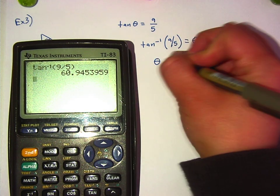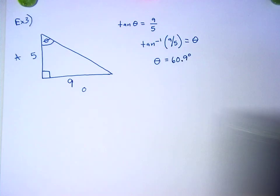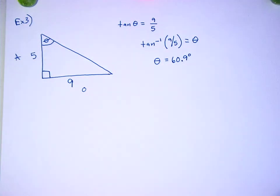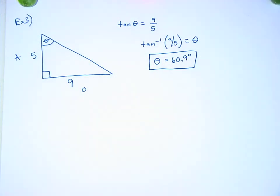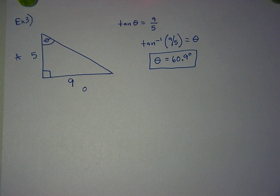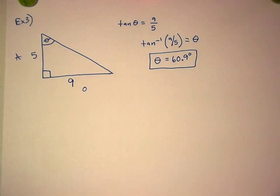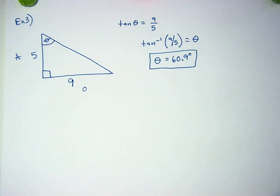So theta on this one, you should have gotten 60.9 degrees. Did you get that? All right. 60.9 degrees. Do you feel like you understand this? Yes. Do you want one more? No. No? You know what? Here's what we're going to do. We're going to do one more, but we're going to do it on the homework assignment. Okay?